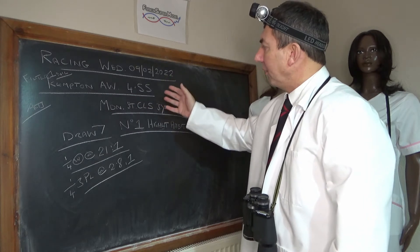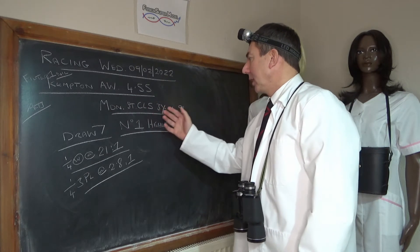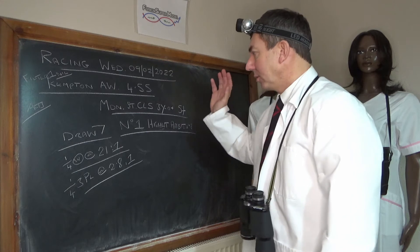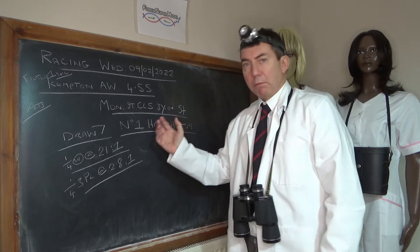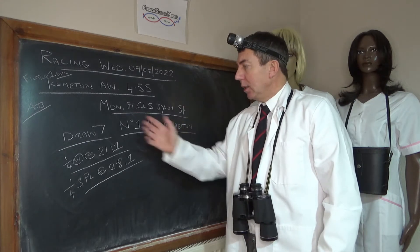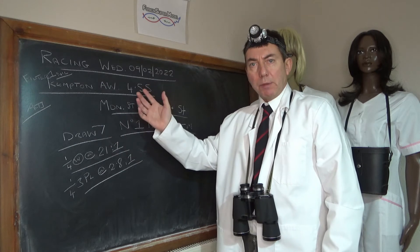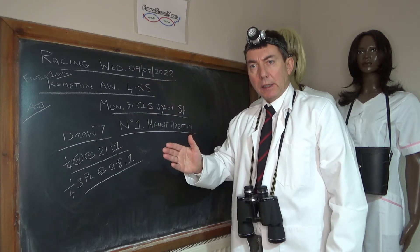the weather first race 4:55. It's a maiden stakes class five, three year old plus, five furlongs. We're on number one Highest Ambition, drawn seven, which is the best draw because it's right-handed. It's the